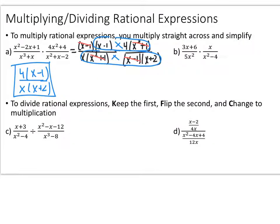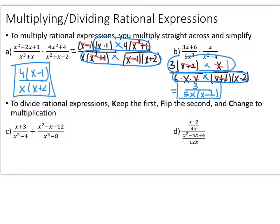For the second multiplication example, the numerator of the first fraction factors into 3 times x plus 2; the numerator of the second can't be factored — written as x times x — and the denominator of the second factors into x plus 2 times x minus 2. Cancel the x plus 2 in numerator and denominator. Writing x squared as x times x lets you cancel one x in the numerator with one x in the denominator. Multiplying straight across, since everything was canceled from the right numerator, you're left with 3 in the numerator and 5x times x minus 2 in the denominator.